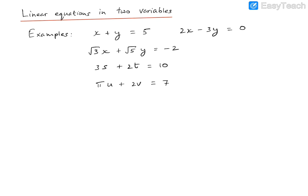Now let us move on to linear equations in two variables and look at some examples. As the name suggests, there will be two letters in the equations, each letter representing one of the variables. For example, X plus Y equals 5 has X as one variable and Y as the second variable. Similarly, 2X minus 3Y equals 0 has variables X and Y.